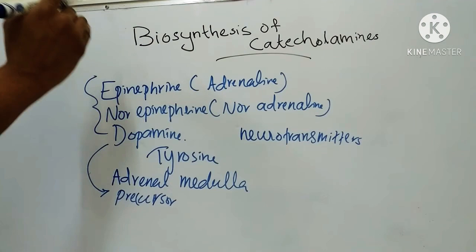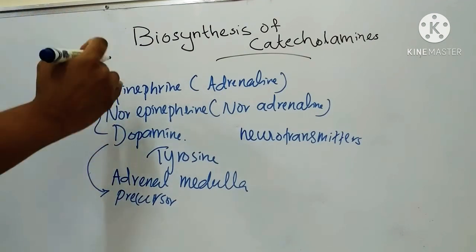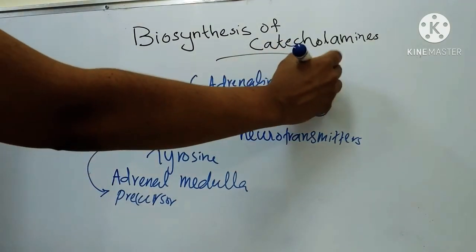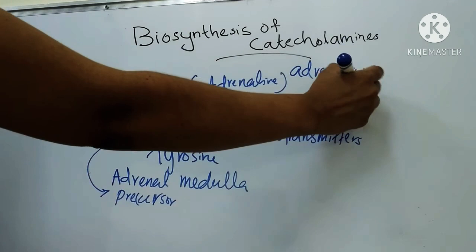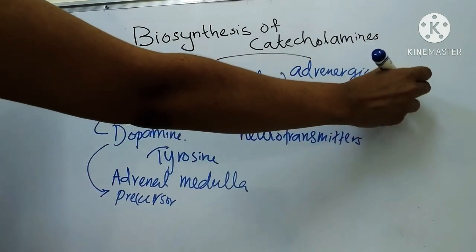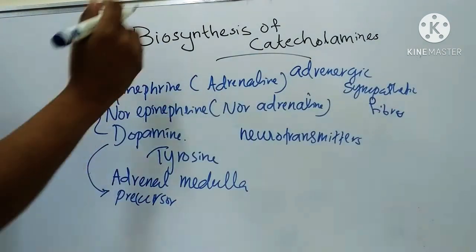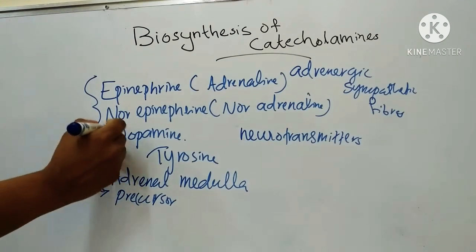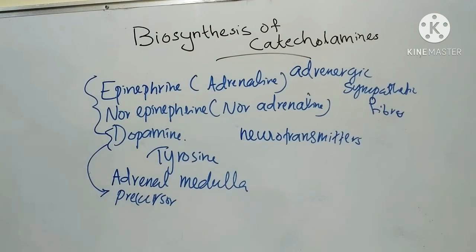Epinephrine and norepinephrine are released at axon terminals of adrenergic sympathetic fibers. Dopamine is produced in nerve terminals, particularly in the hypothalamus and diencephalon. Let's now see the steps in the biosynthesis of catecholamines.